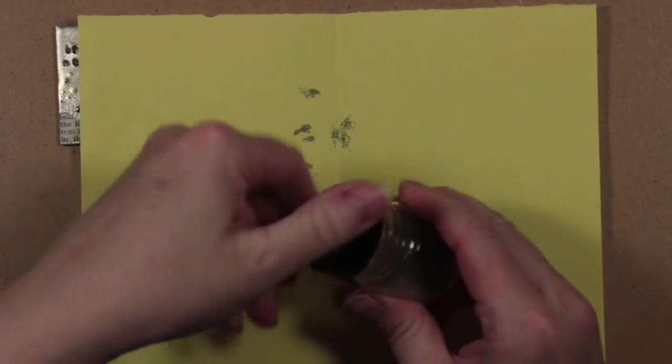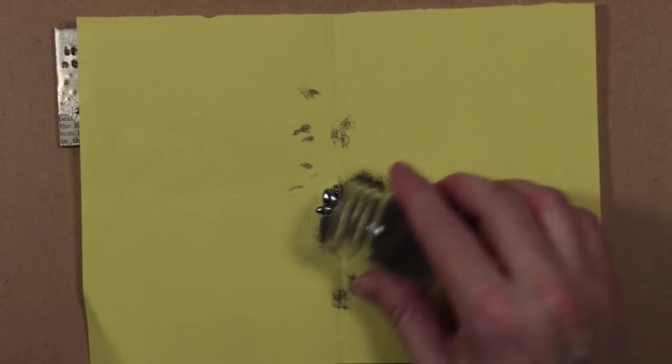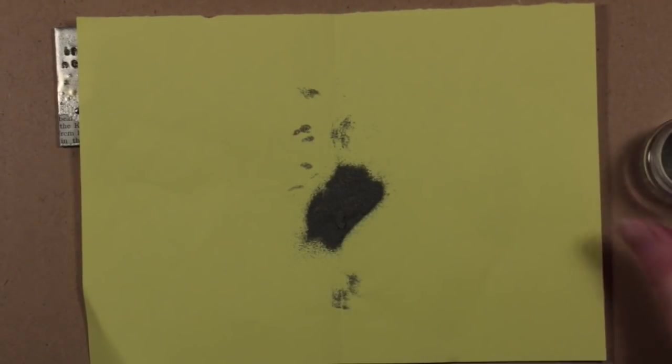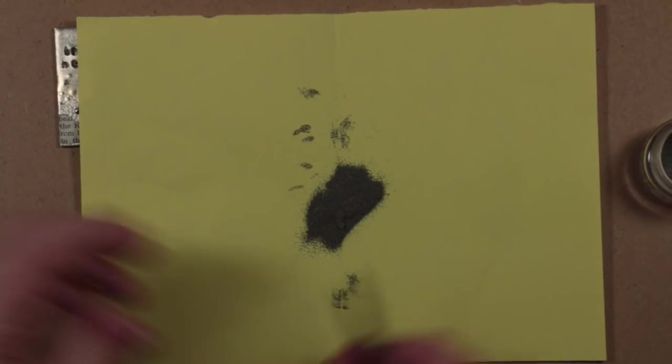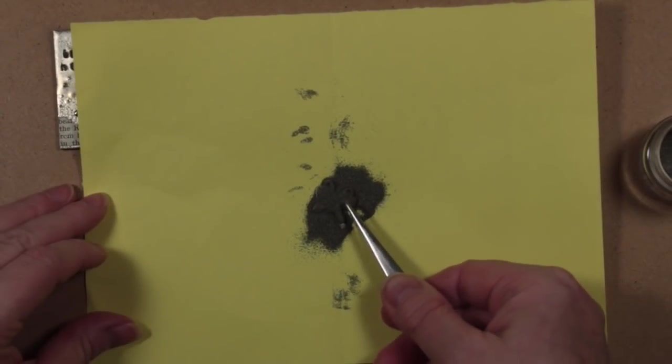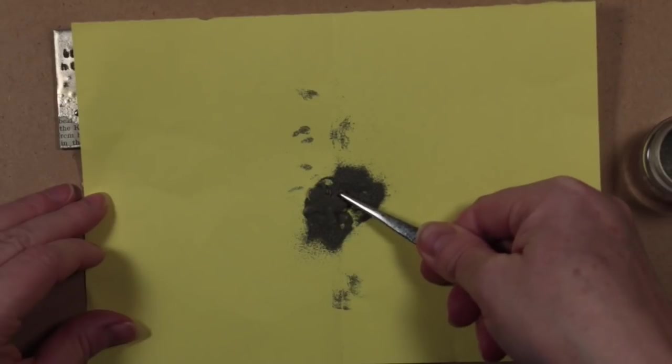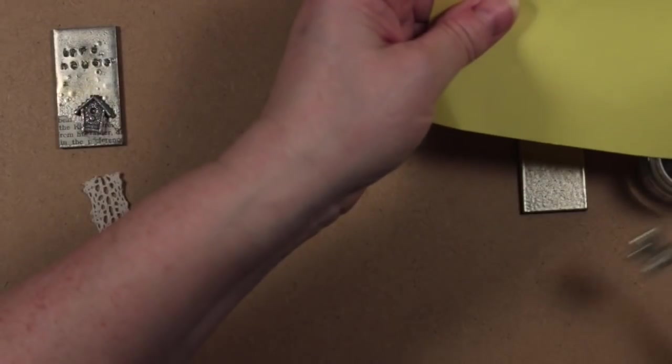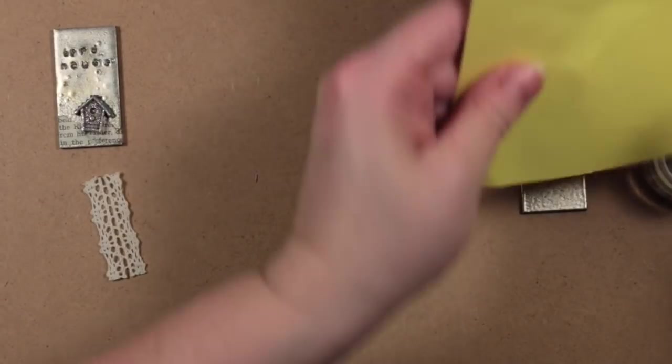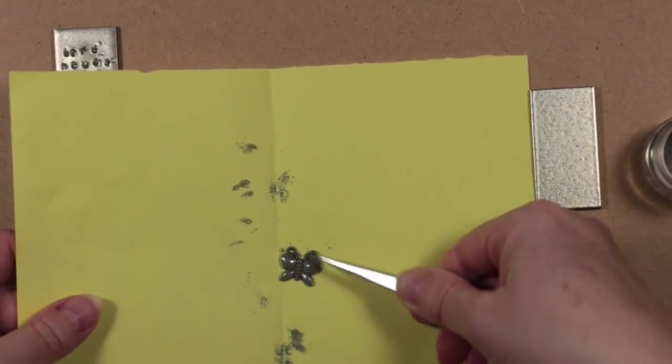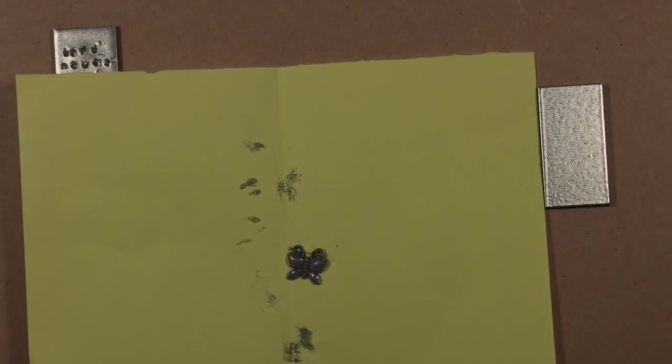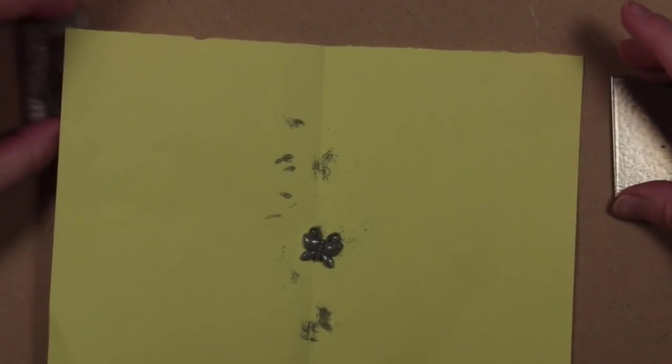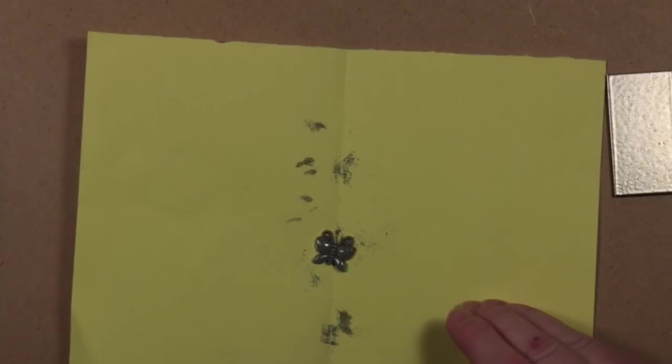I'm going to cover it with the pewter embossing powder. I've got a pair of tweezers that just make this easier to handle. I'm going to heat set that. I'm going to try and heat set it on my yellow piece of paper and move these to one side so they don't get heated again.